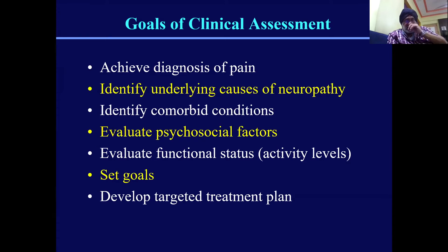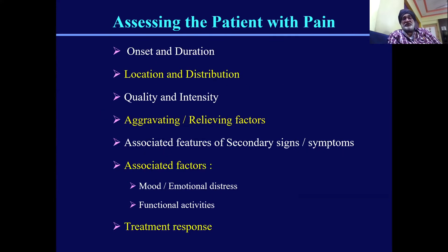What is the goal of treatment? Before going to the goals of treatment, we must assess properly before we diagnose. We must achieve a proper assessment, know what is the underlying cause of neuropathy — whether it is diabetes or vitamin B12 deficiency — and see the comorbid conditions. We should also assess the psychological and functional status. Only after that can we set the goals.